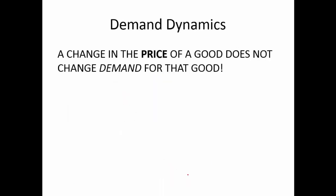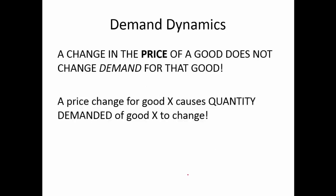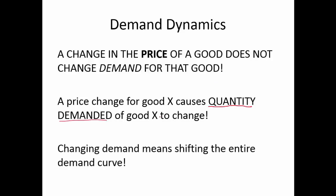Now let's talk about dynamics. The change in the price of a good does not change demand for that good. Price changes, and the quantity will go up and down along a given demand curve. To change the entire demand curve — changing demand itself — we have to have something other than the price of this good shifting. And that's what we call the determinants of demand.